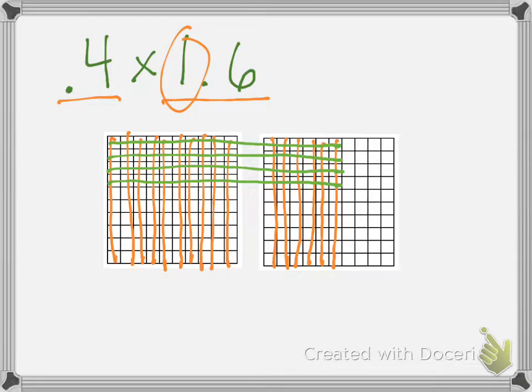And then what we want to do is count those up. So here we can see we have 40. And then here we have 1, 2, 3, 4, 5, 6, 7, 8, 9, 10. That's 50, 51, 52, 53, 54, 55, 56, 57, 58, 59, 60, 61, 62, 63, 64. So we have 64 hundredths as our product.